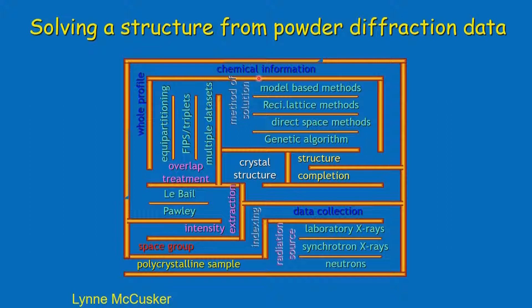Any structure determination is done in two steps. First we do all these things and get a trial structure. The trial structure then uses the enormous amount of over-determined data that is available, and refines the positions and thermal parameters. It is the same thing we do here, but we do it with Rietveld refinement — meaning we refine both the profile as well as the structural data.